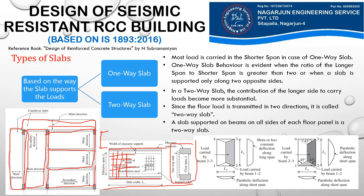In a two-way slab the contribution of the longer side to carry loads becomes more substantial. While in a one-way slab most load is carried in the shorter span, in two-way slabs the contribution of the longer side also becomes significant. Since the floor load is transmitted in two directions — both shorter and longer — it is called a two-way slab. For two-way action, either the ratio of longer side to shorter side should be less than two, or the slab should be supported on beams on all sides.